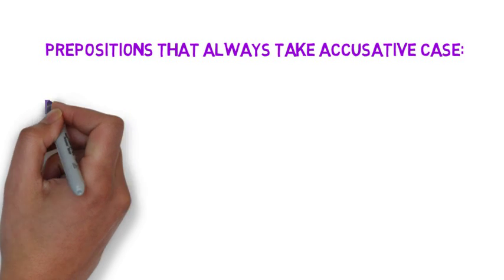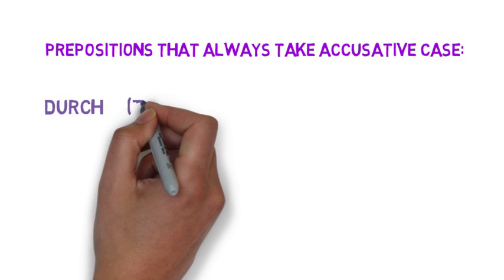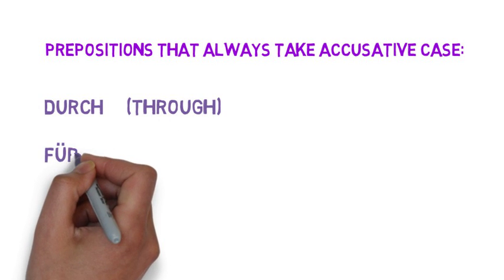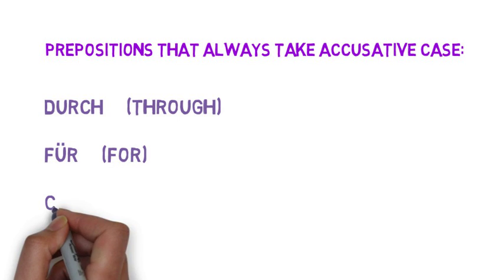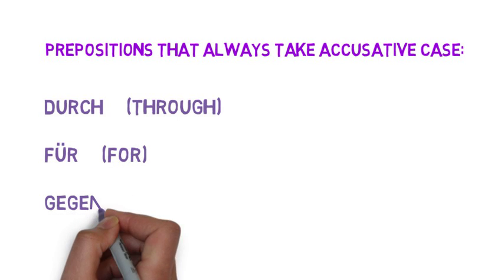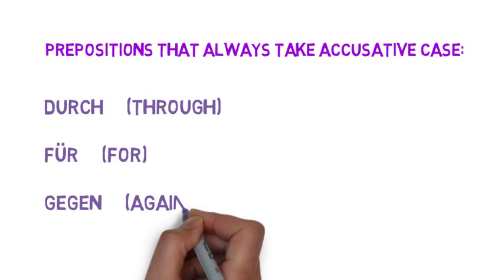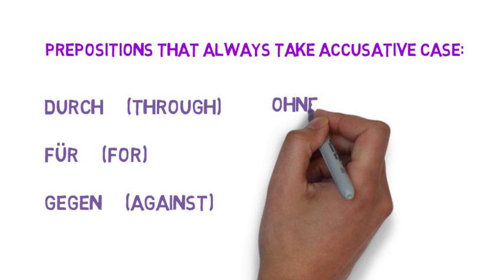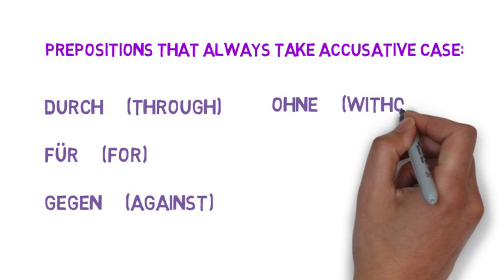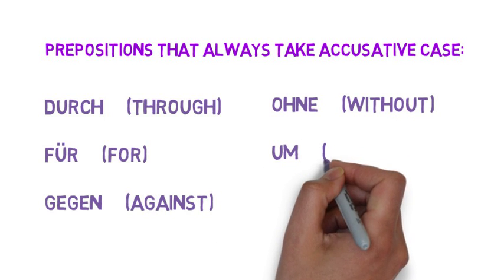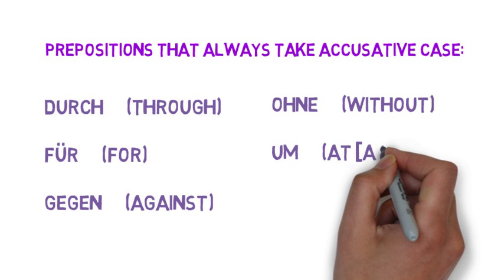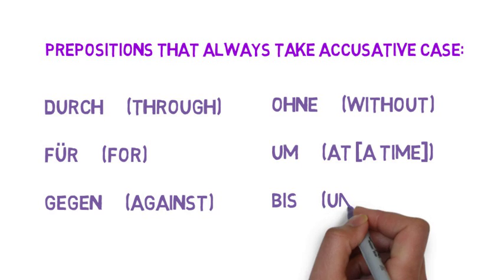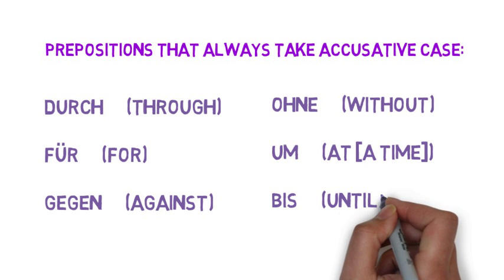These prepositions are: DURCH, which usually means 'through'; FÜR, which often means 'for'; GEGEN, which means 'against'; OHNE, which means 'without'; UM, which means 'at' — only when used with a time, not with a place; and BIS, which means 'until'.